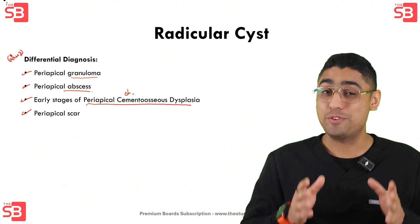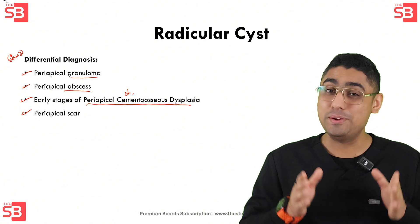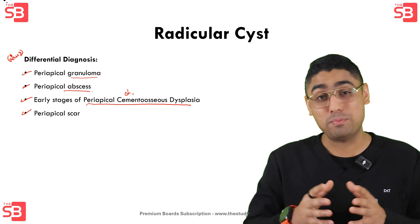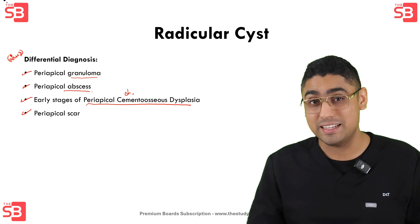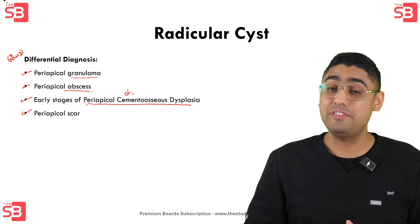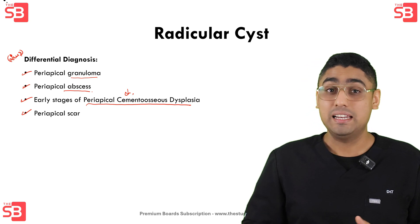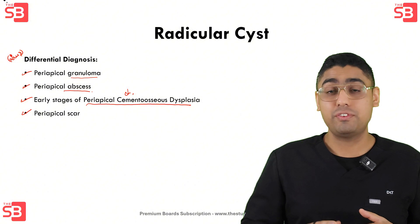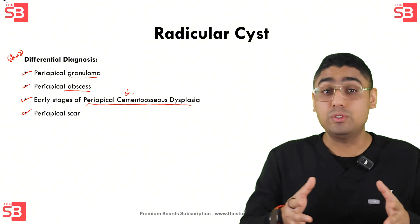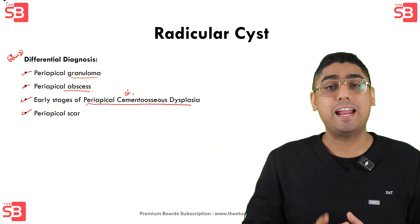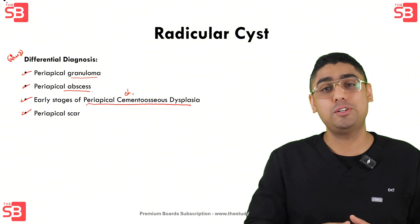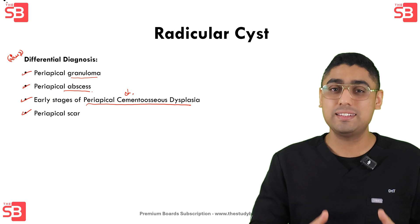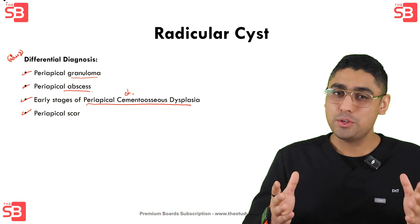So when you see a radiolucent area on a radiograph, remember to consider these possibilities. Look for features like lesion borders, presence of acute symptoms, and patient history to differentiate between these conditions and radicular cysts.